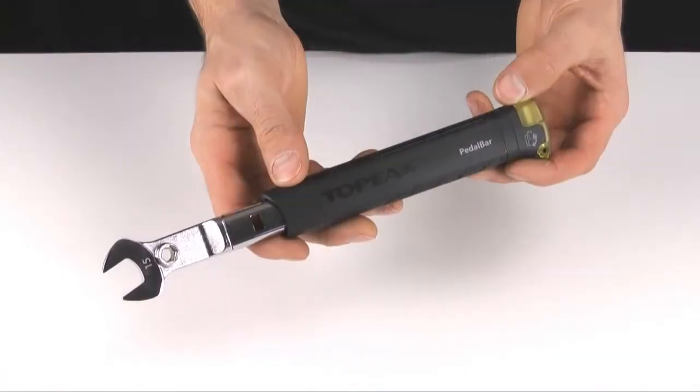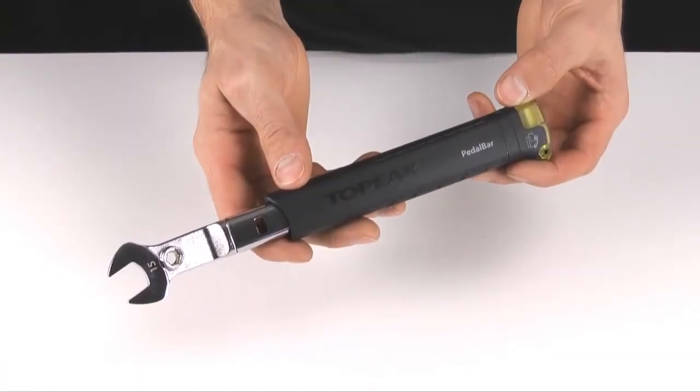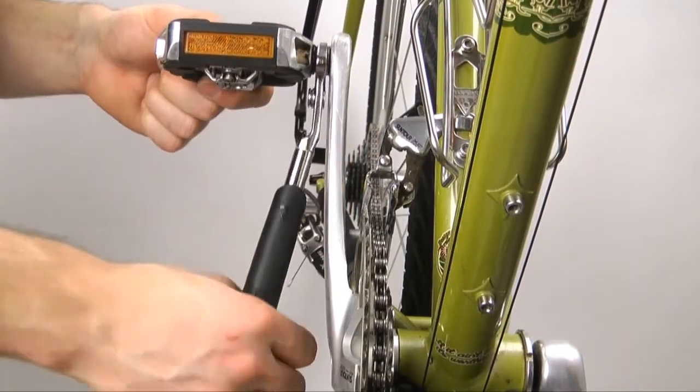The pedal bar includes a number of innovative design features. The wrench head is offset at an angle to keep your knuckles away from chain rings and crank arms.